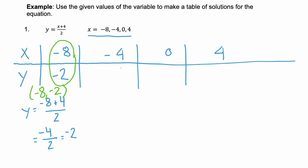For the second value, x equals negative 4. Using the same process: y equals (negative 4 + 4) / 2. Negative 4 plus 4 is 0, and 0 divided by 2 is 0 — if you have 0 cookies and divide among two friends, everyone still gets 0 cookies.